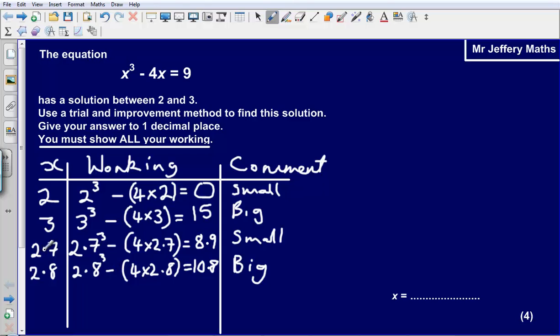So we have now trapped our answer between two numbers. We have got it between 2.7 and 2.8. It is going to be one of those answers. We need to figure out which one of those it is going to be. So the way in which we do this is we take the number halfway between 2.7 and 2.8, which is 2.75.